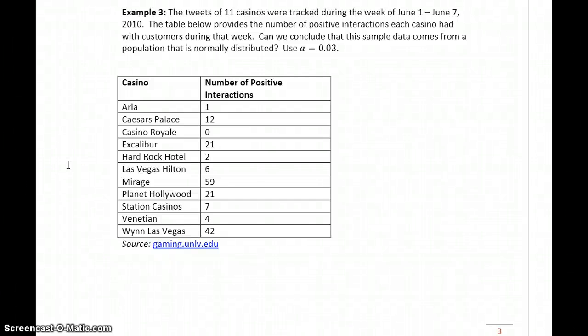In example three, we have the tweets of 11 casinos that were tracked during the week of June 1st to June 7th, 2010. The table below provides the number of positive interactions each casino had with customers during that week. That means the casino posted a tweet and a customer or person on Twitter commented back.